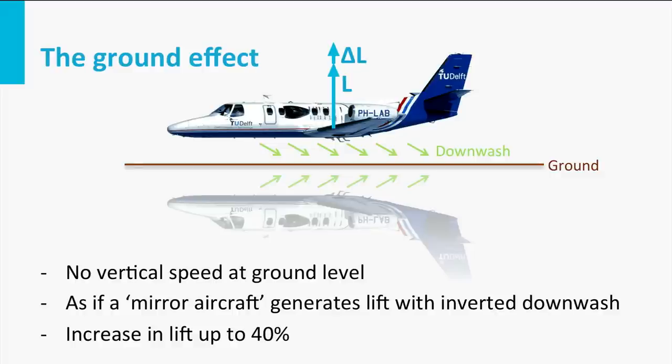This is also a way to visualize why ground effect generates extra lift: you basically feel the virtual downwash of the imaginary aircraft flying underground upside down. The downwash of this mirrored aircraft is essentially extra air that pushes you up and generates extra lift. When you get very close to the ground, this can amount to a substantial increase in lift — as shown on the slide, up to 40% for some aircraft. This is also the effect you notice when landing, during the flare when speed decreases: normally you would have stalled already, but you continue to fly a bit longer before actually touching down.